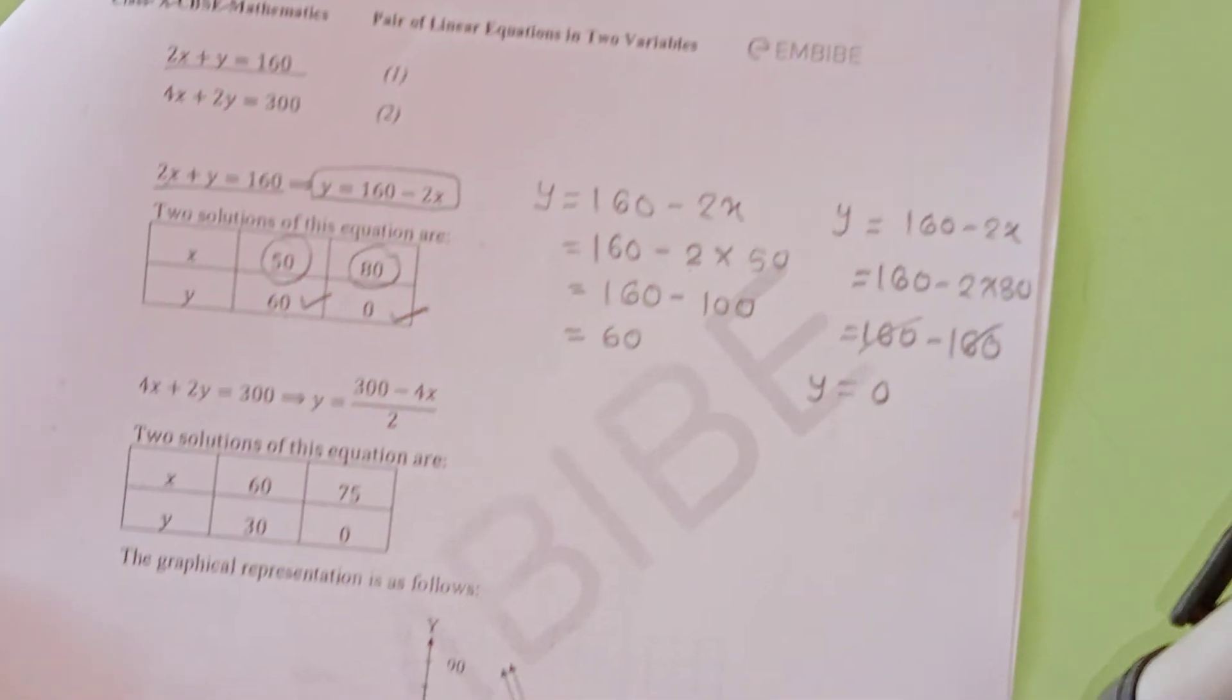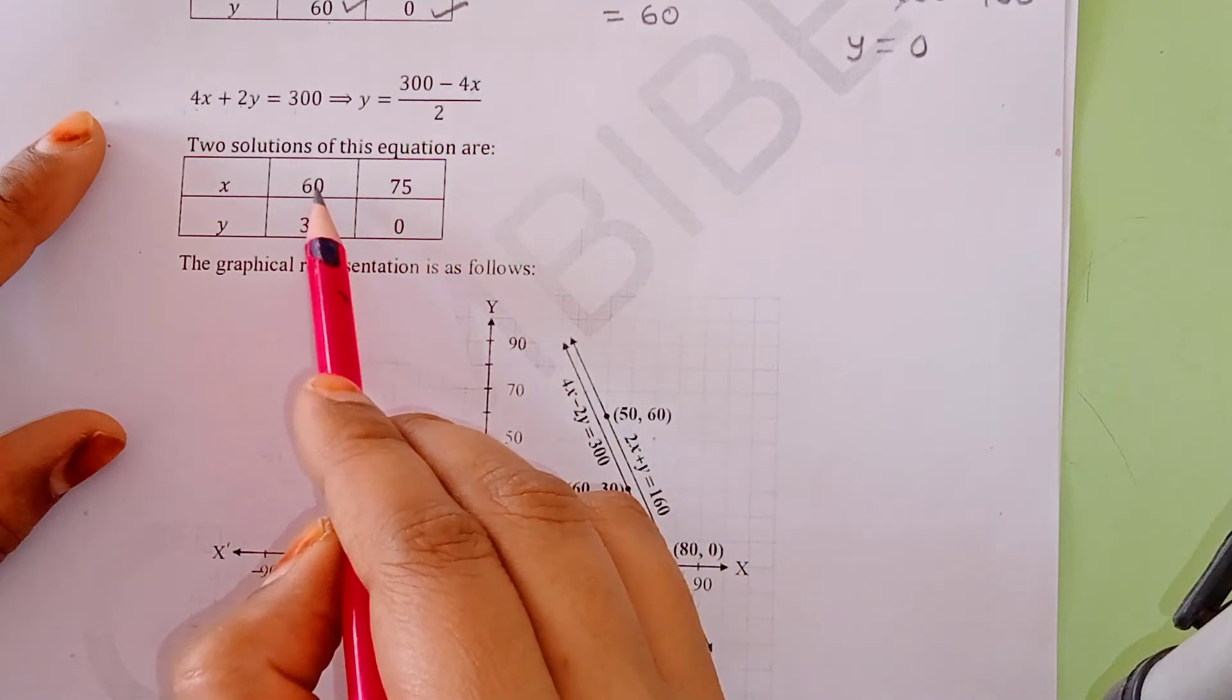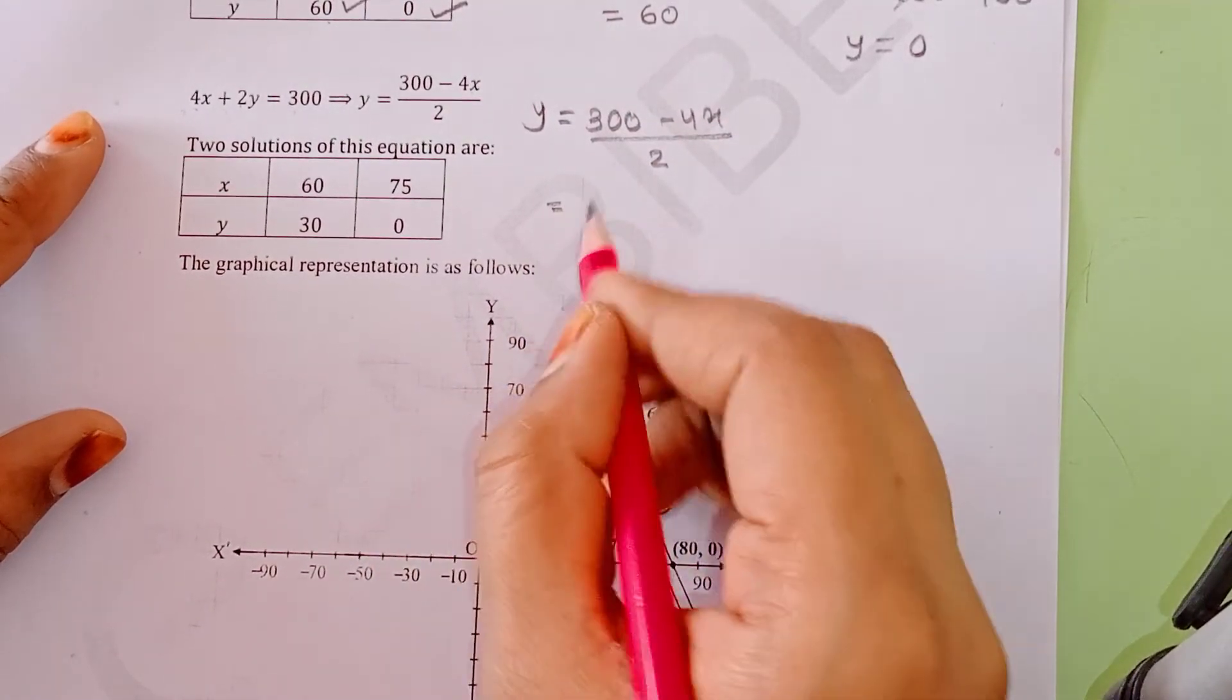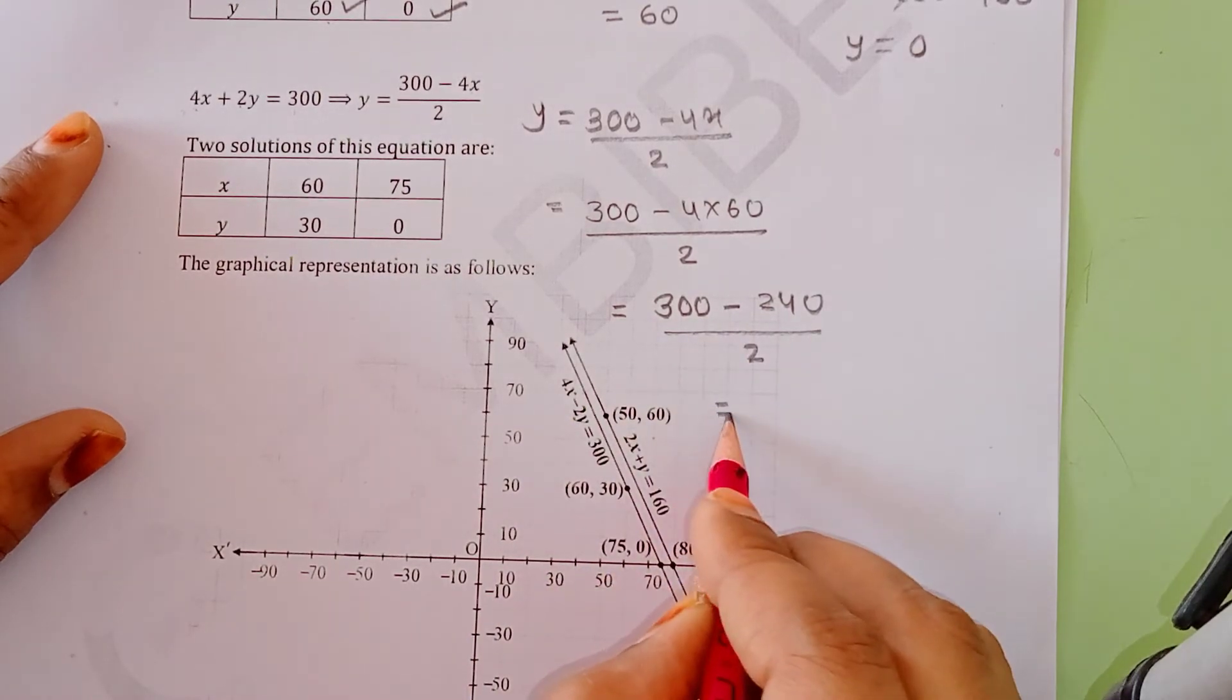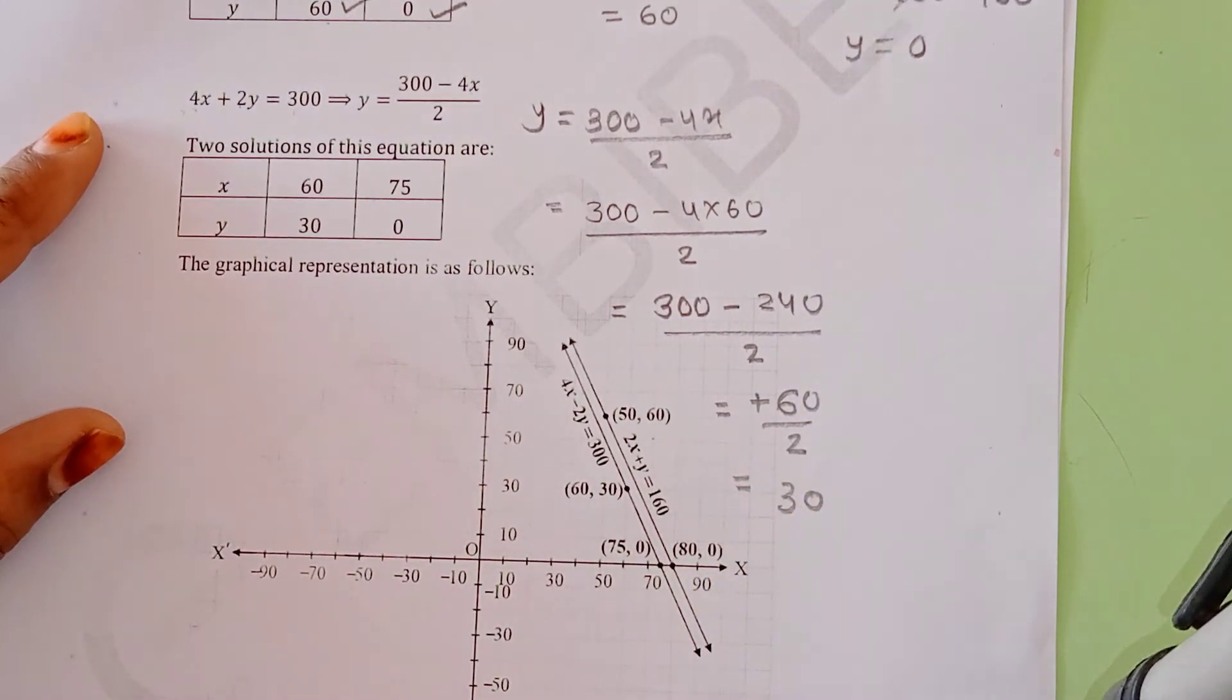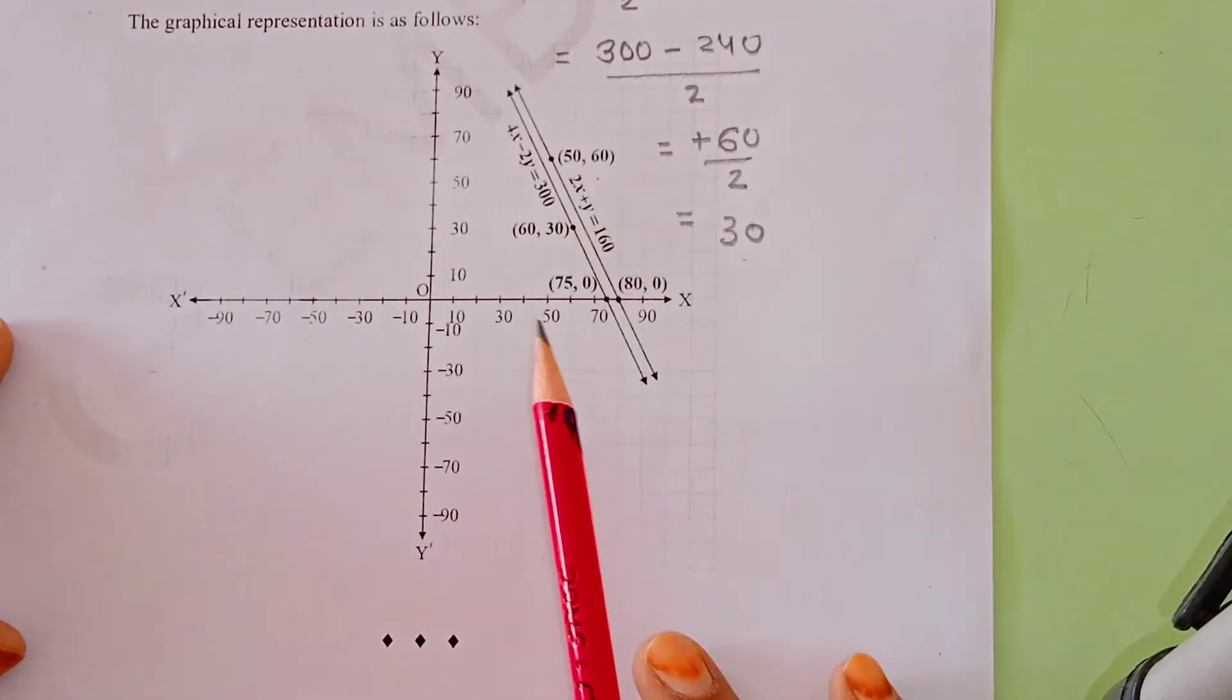For the second equation, we rearrange: y = (300 - 4x)/2. When x = 60, y = (300 - 240)/2 = 60/2 = 30. When x = 75, y = 0.